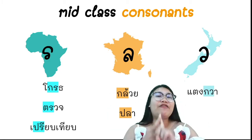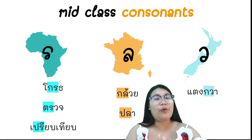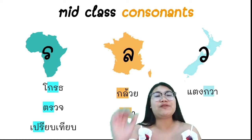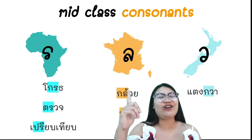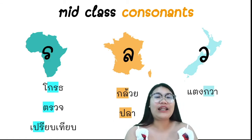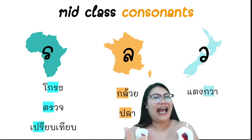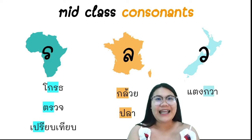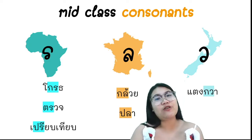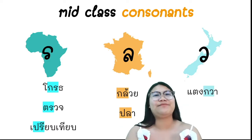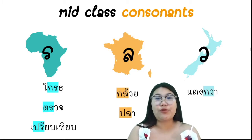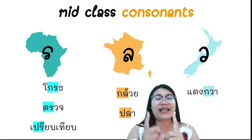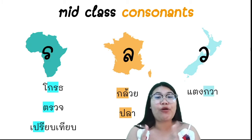So to summarize, the second consonants รอลิง, รอเรือ, and วอแวน come with middle-class consonants. For รอเรือ, we have three: กอไก่, ต่อเตา, ปอปลา. For รอลิง, we have two: กอไก่ and ปอปลา. For วอแวน, we have only one: กอไก่. For the tone rules, if the first consonant is middle-class and comes with รอเรือ, รอลิง, or วอแวน, we use the tone rule for middle-class.